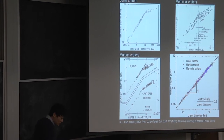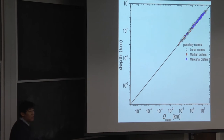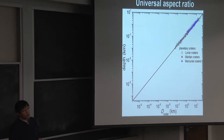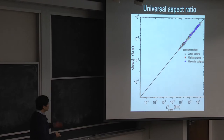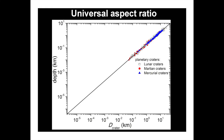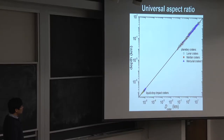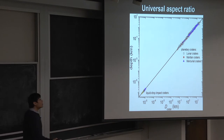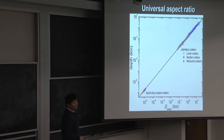The natural question is: what's the aspect ratio of raindrop craters? Our liquid drop crater data, without any fitting parameter, fall right on top of the same line as the moon, Mercury, and Mars craters. This is a seven-order-of-magnitude difference in crater diameter, and a 20-order-of-magnitude difference in energy. But they all fall on the same line with no fitting parameters.